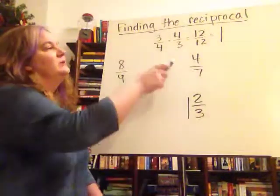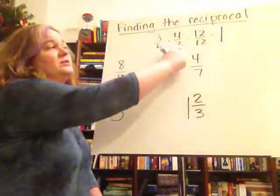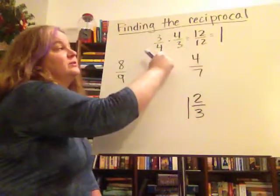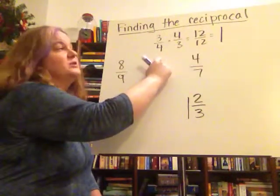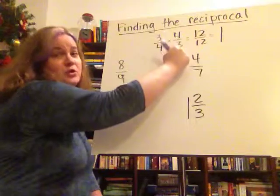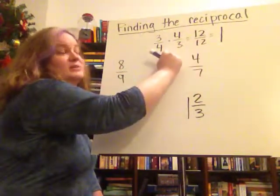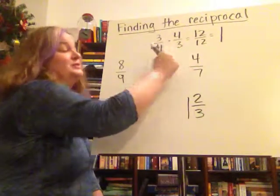Well, first off, what is a reciprocal? A reciprocal is whatever you can multiply a number by so that you end up with one. So in other words, if I take something like three-fourths and I flip it so I have four-thirds, then I get 12 over 12, which is one. And so that means that three-fourths and four-thirds are reciprocals.